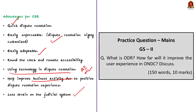That is all about this editorial. In this discussion we saw about ONDC — Open Network for Digital Commerce — and ODR — Online Dispute Resolution. Now with these key takeaway points, let us move on to the next article discussion.